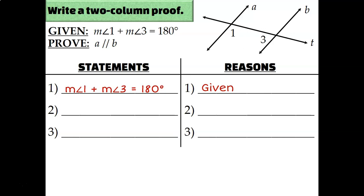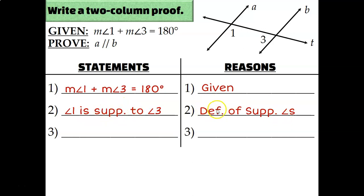What I was given is that angle 1 plus angle 3 equals 180, and that's what supplementary angles do — they add up to 180 degrees. So for statement number 2, I'll say that angle 1 is supplementary to angle 3, and my reason would be the definition of supplementary angles. Now I can copy and paste that last statement for my prove, with the reason being the consecutive interior angles converse.